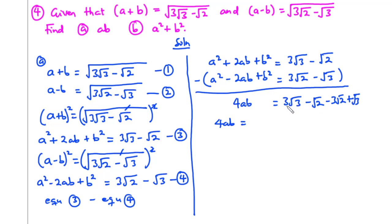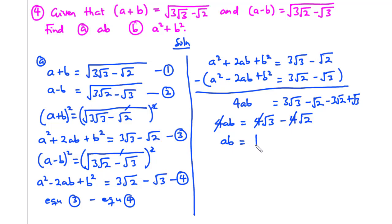On the right hand side we have 3 root 3 plus root 3, which is 4 root 3, and then negative root 2 minus 3 root 2, which is negative 4 root 2. Since 4 is common to all terms, we can cancel out 4, leaving us with ab equals the square root of 3 minus the square root of 2.